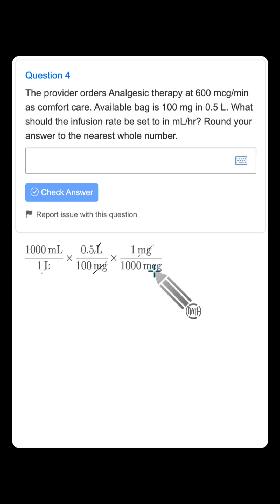We can get rid of micrograms by bringing in 600 micrograms per minute. I'm writing that 600 micrograms at the top so that we can cancel out our micrograms.